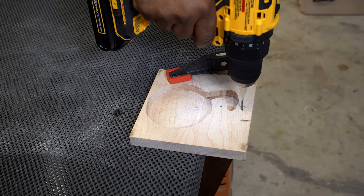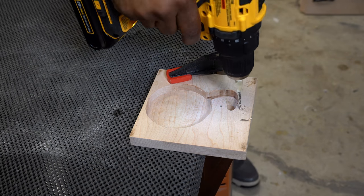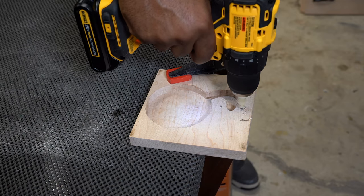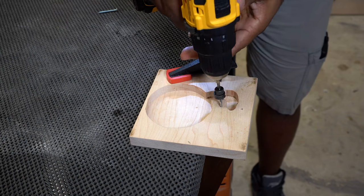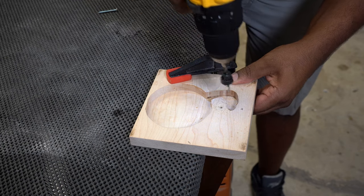If you notice, I also added a piece of tape to the drill bit and this is going to be my depth indicator. Since there will be screws, I need to countersink the heads. This will be important for the piece I'll add later.